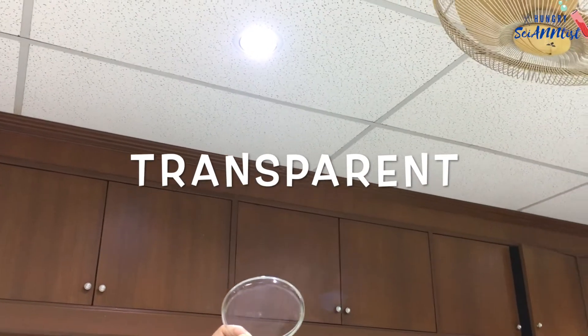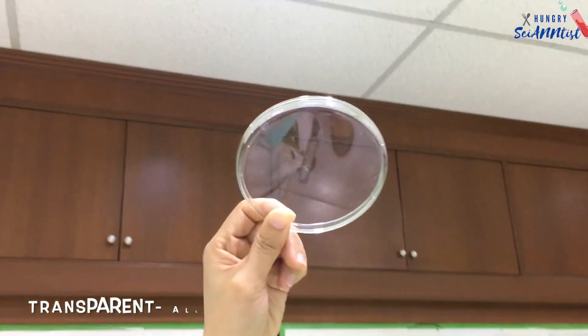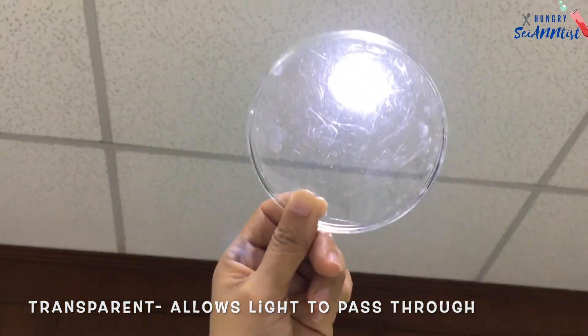An object that allows most light to pass through is called transparent, like a clear glass.